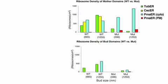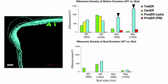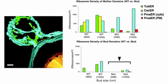The distribution of ribosomes was altered in yeast lacking reticulins and YOP1. Ribosome number was increased on the cytoplasmic face of the plasma membrane-associated ER in mutant mother cells, whereas fewer ribosomes studded ER membranes in mutant buds. Reticulins and YOP1 therefore regulate ER shape and distribution, plasma membrane association, and ribosome density.